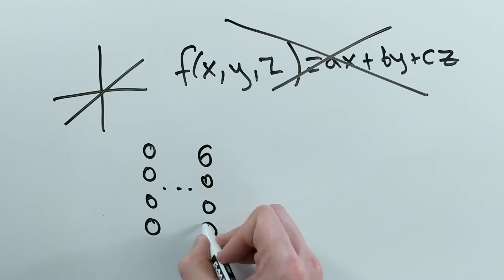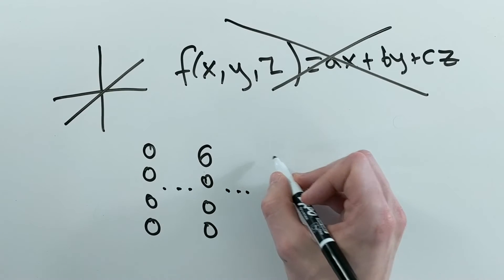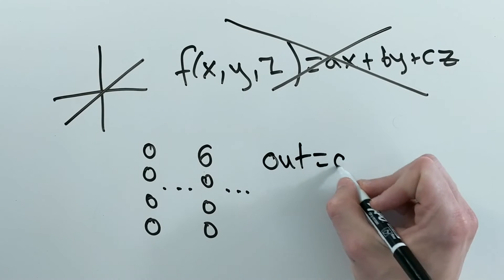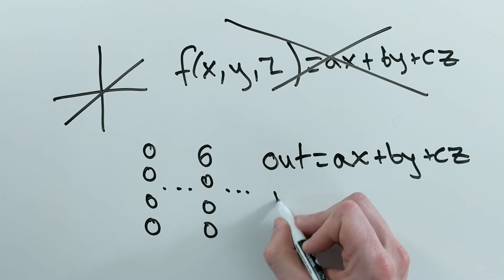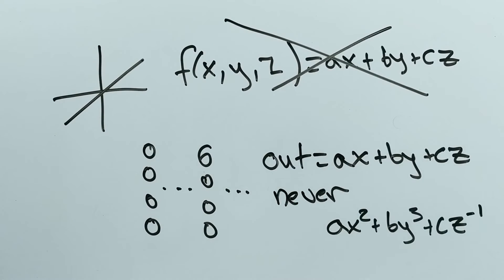Remember, we assume that there is some function that describes how to solve our problem. If we only use linear combination, we are limiting what our function can be, whereas if we use a non-linear activation function, then we can guarantee that it is at least possible to approximate our actual function, assuming that we use enough layers and nodes.